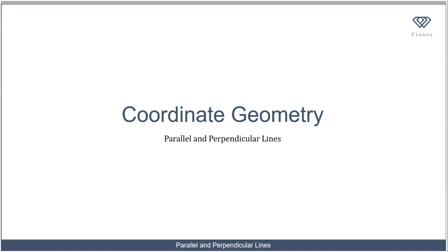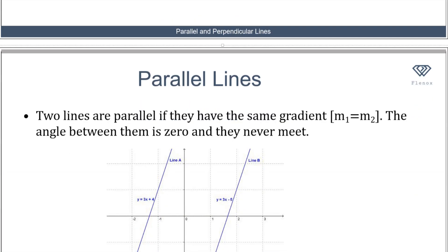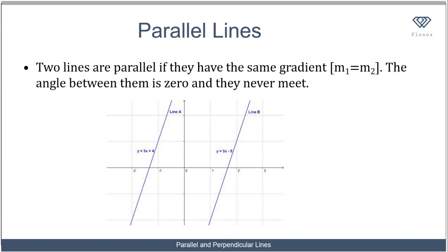Now I'll be looking at parallel and perpendicular lines. So what do we mean when we say two lines are parallel? Two lines are parallel if they have the same gradient, that is m1 equals m2. The angle between them is zero and they never meet. If I draw two lines that are parallel, it means those two lines have the same gradient, the angle between them is zero, and they can never meet.